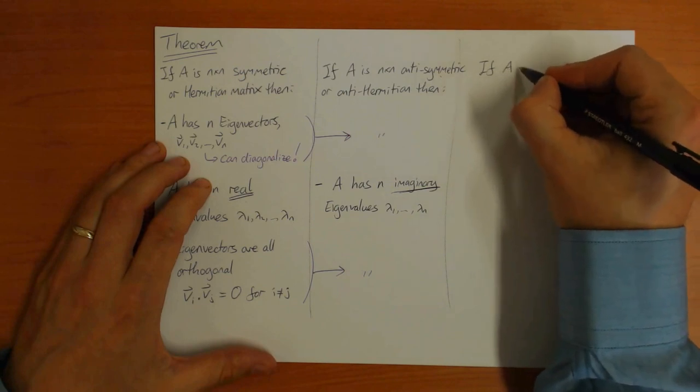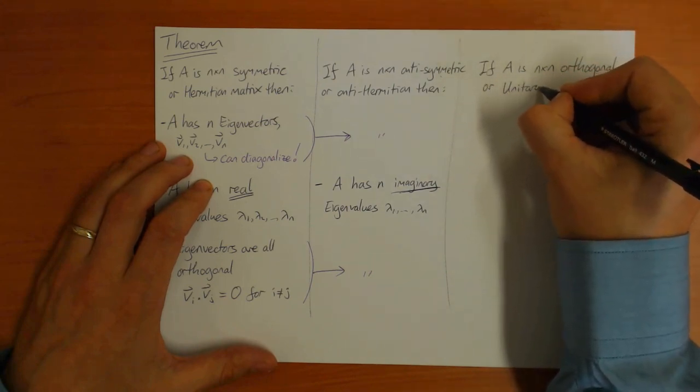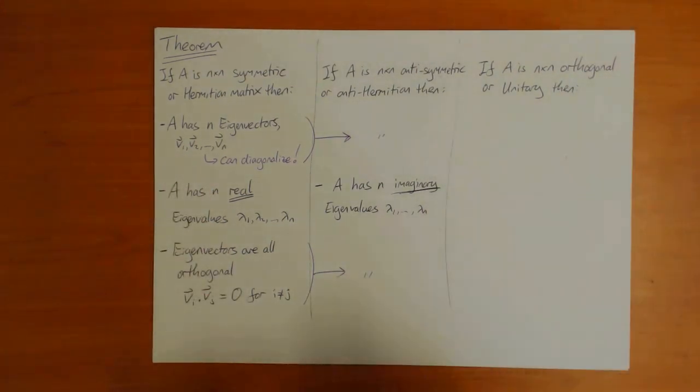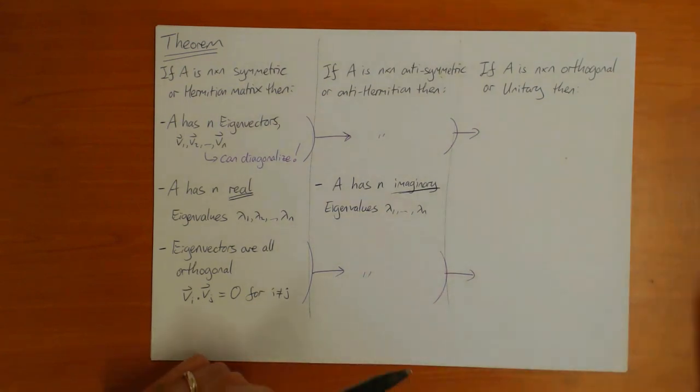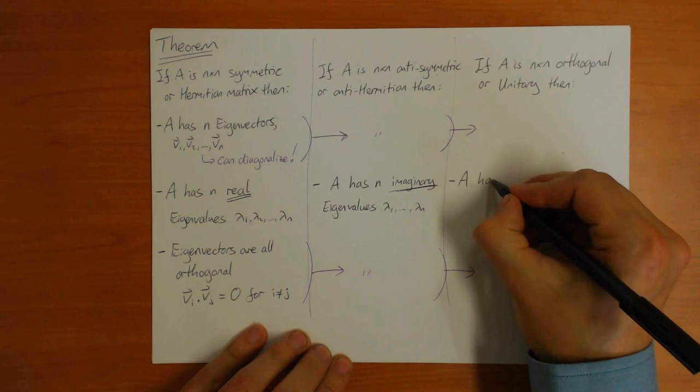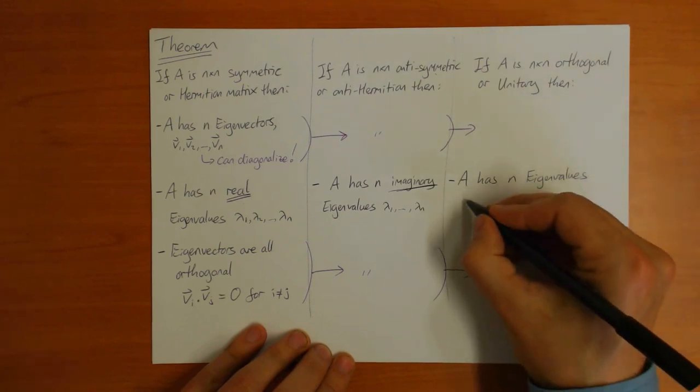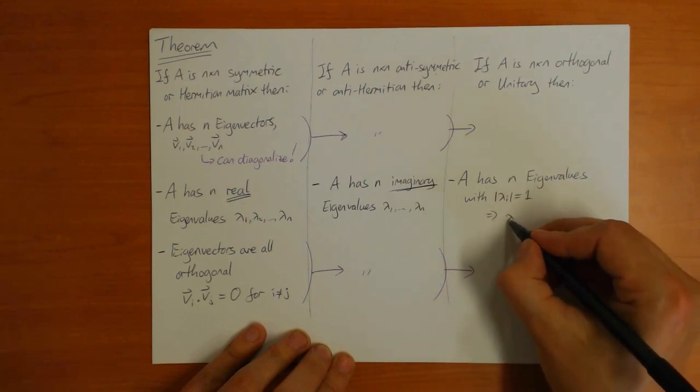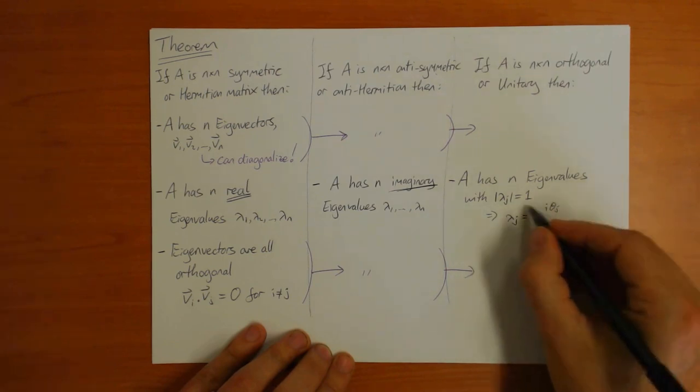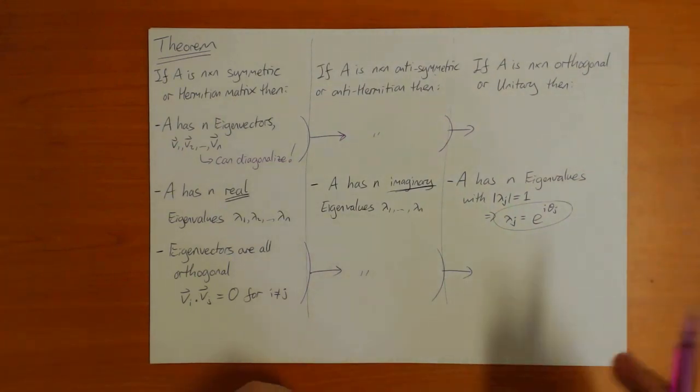The last version of the theorem is for orthogonal or unitary matrices. And again, the first part and the last part of the theorem are the same. It has n eigenvectors, you can always diagonalize, the eigenvectors are orthogonal. But in this case, the matrix A has n eigenvalues with size 1. So lambda i equals 1. These can be complex. This means that you can always write lambda j is equal to e to the i times theta j for some angle theta. And this is true of all of the eigenvalues - they all have unit length.